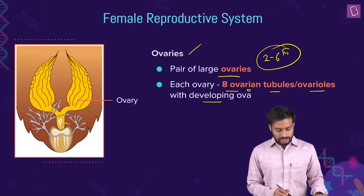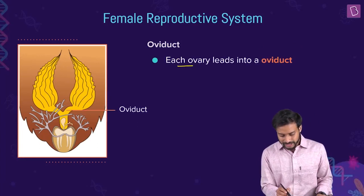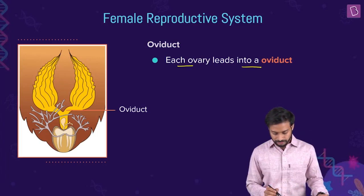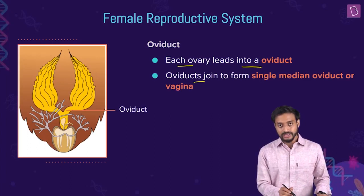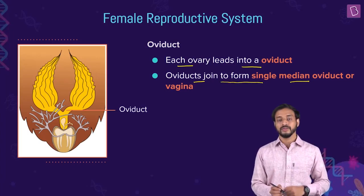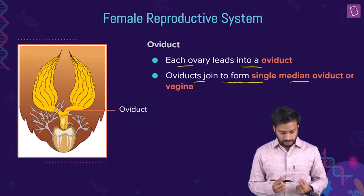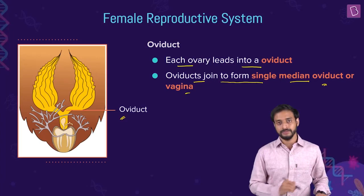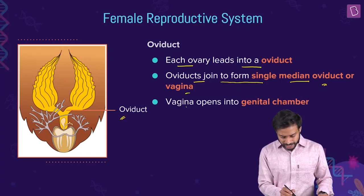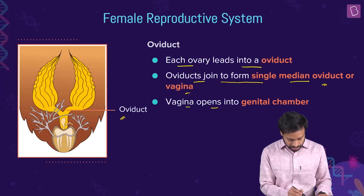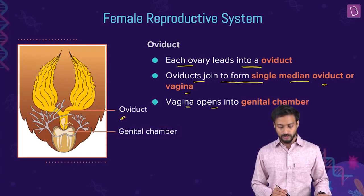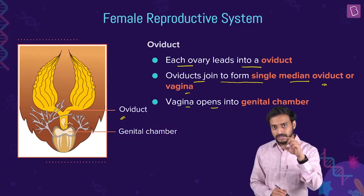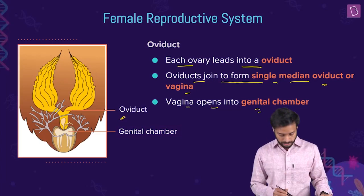Each ovary leads into an oviduct. The two oviducts then join to form a single median oviduct, also called the vagina. So the pathway is: ovary → oviduct → they join to form the single median oviduct or vagina → which leads to the genital chamber.